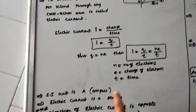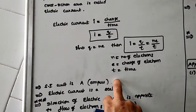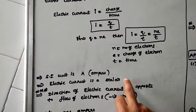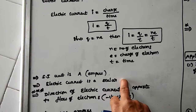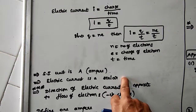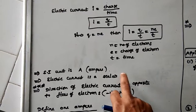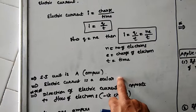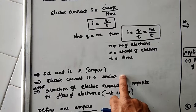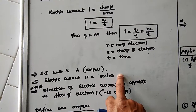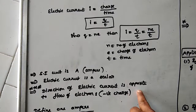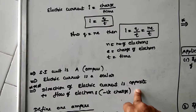The SI unit of current is ampere — named after a scientist. Electric current is a scalar quantity, meaning it has only magnitude. Although direction is associated with it, it is treated as a scalar in a special case. Remember: electric current is a scalar.